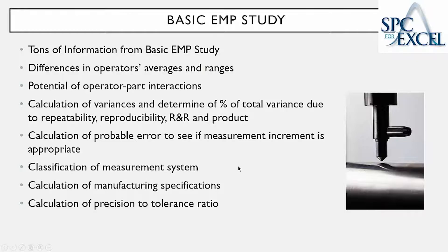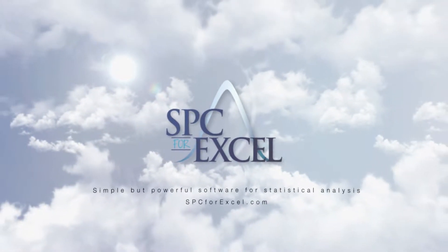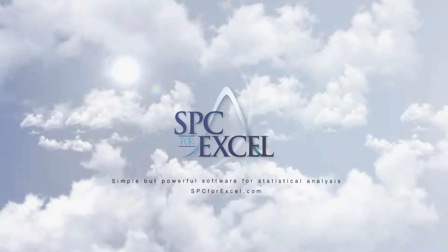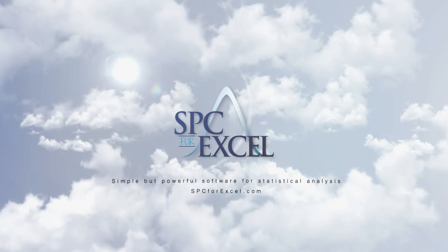So basically with a basic EMP study, you're getting a lot of information: differences in operator averages and ranges, the potential for operator-part interactions, all your variances and ratios, the probable error to check if the measurement increment is appropriate, classification of your measurement system, and your manufacturing specifications as well as your precision-to-tolerance ratio. You should be using the basic EMP study to analyze your gauge R&R results. Thank you.